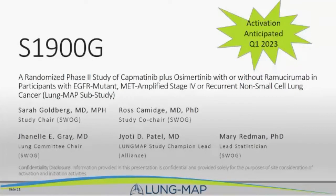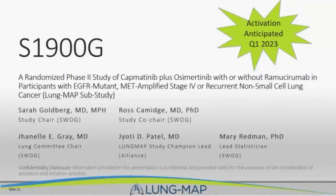Dr. Sarah Goldberg — who runs the division of thoracic oncology at Yale and was recently promoted — is going to tell us about S1900G and do some training since this is basically the kickoff for this trial. We're anticipating activation in Q1 of 2023. This is a randomized phase 2 study of capmatinib plus osimertinib with or without ramucirumab in participants with EGFR mutant, MET amplified metastatic or recurrent non-small cell lung cancer.